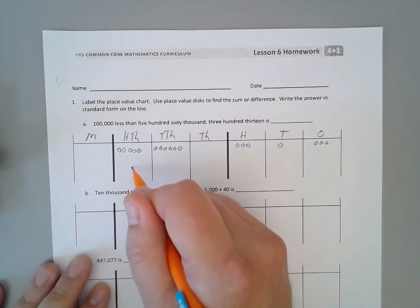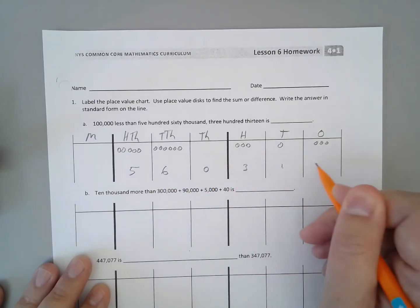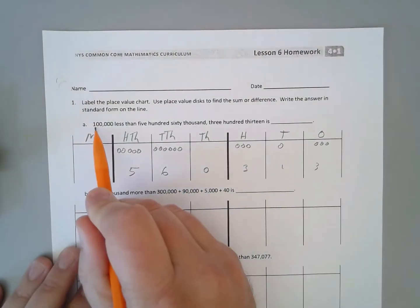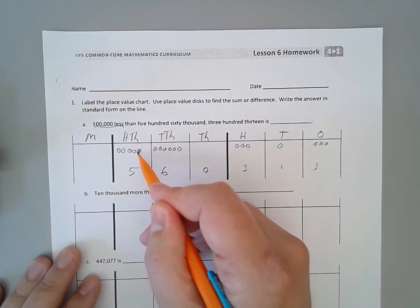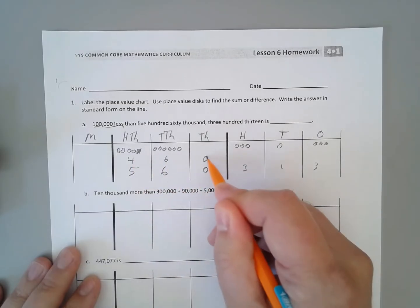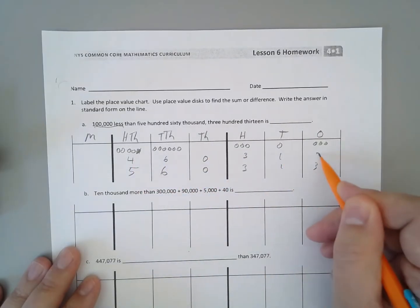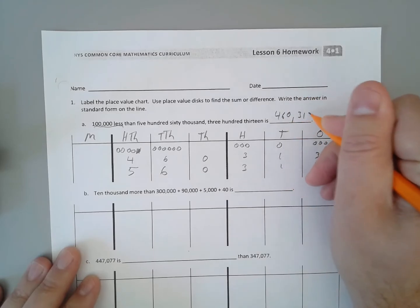Okay, so we now have 560,313. We want 100,000 less than that. So we get rid of 100,000, and we're now left with 460,313. And that's our answer.